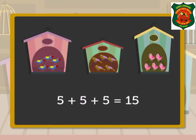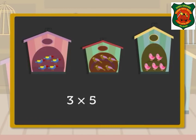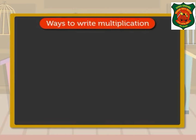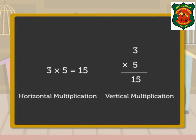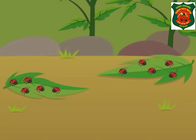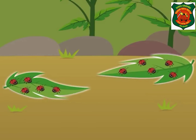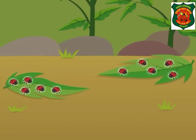Using the multiplication sign, we write it as three multiplied by five is equal to fifteen. So there are fifteen birds in all. Now let's look at the ways to write multiplication — this is called horizontal multiplication, and this is called vertical multiplication.